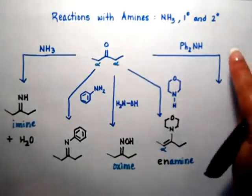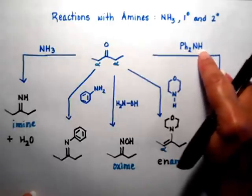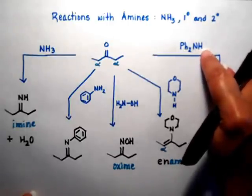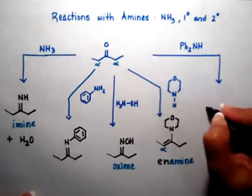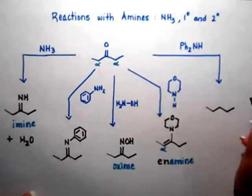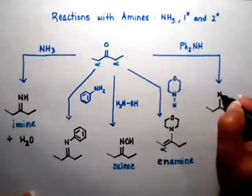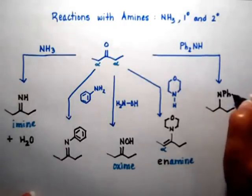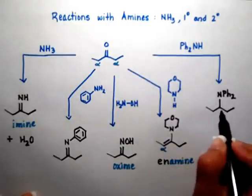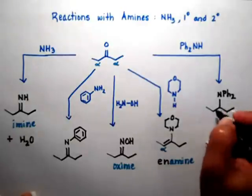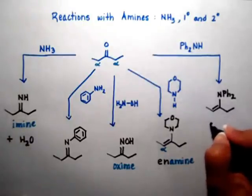Let's do that again, this time with diphenylamine. Notice that I have two phenyl rings — two benzene rings attached to my nitrogen. But what's important is counting the number of hydrogens: I only have one hydrogen. So I know I'm going to get a double bond between the carbons. I'm going to still attach my nitrogen where the oxygen used to be, and I can do the double bond to the left or to the right — it's equivalent in this case, so it doesn't make a difference. So I get again another enamine.